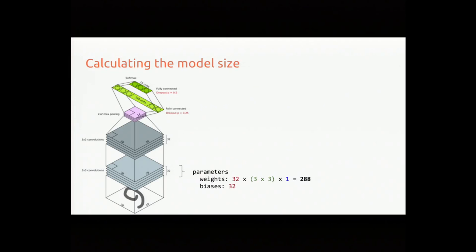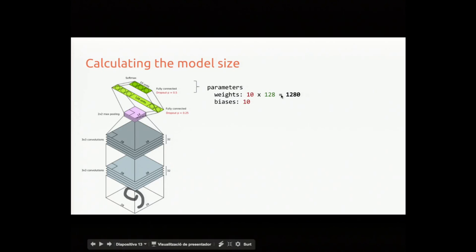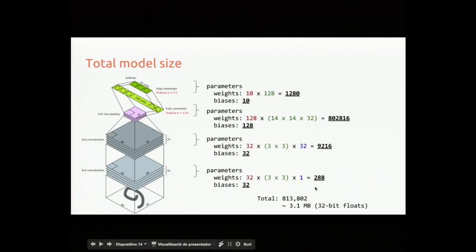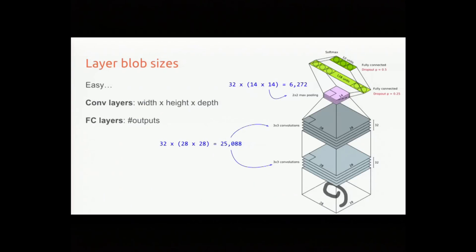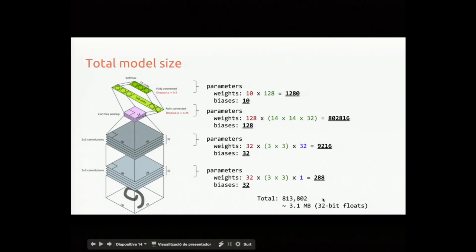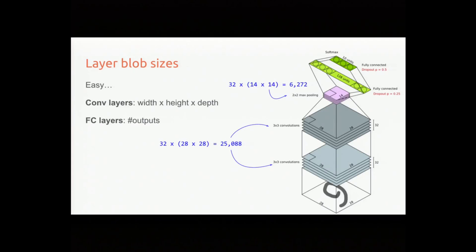You can see the bulk of parameters in this network are in the fully connected layer — about 802,000 — compared to only thousands in the convolutional layers. Adding everything up with 32-bit floats, this whole model — which works pretty well on MNIST — is about 3.1 megabytes in size. That's also what you'd distribute if you wanted to share the model. But when actually doing computations, you also need to store intermediate outputs.